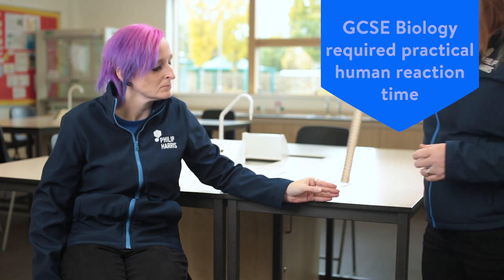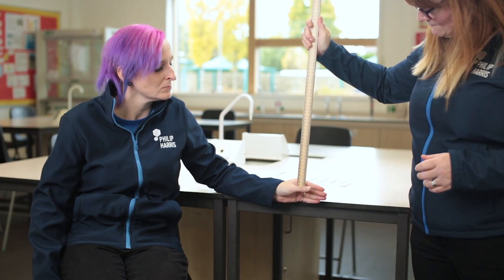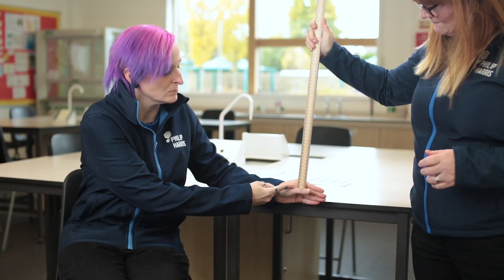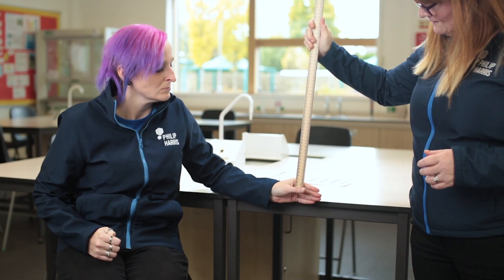Person 2 holds the meter ruler vertically so that the 0cm mark is in between person 1's thumb and first finger, and tells person 1 to get ready to catch the ruler.